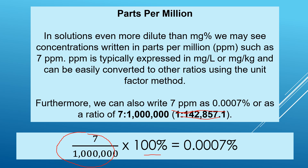Parts per million represents a solution even more dilute than milligram percent. PPM is typically expressed as milligrams per liter or milligrams per kilogram. For example, 7 PPM can also be written as 0.0007%. Converting using dimensional analysis: 7 ÷ 1,000,000 × 100% = 0.0007%.